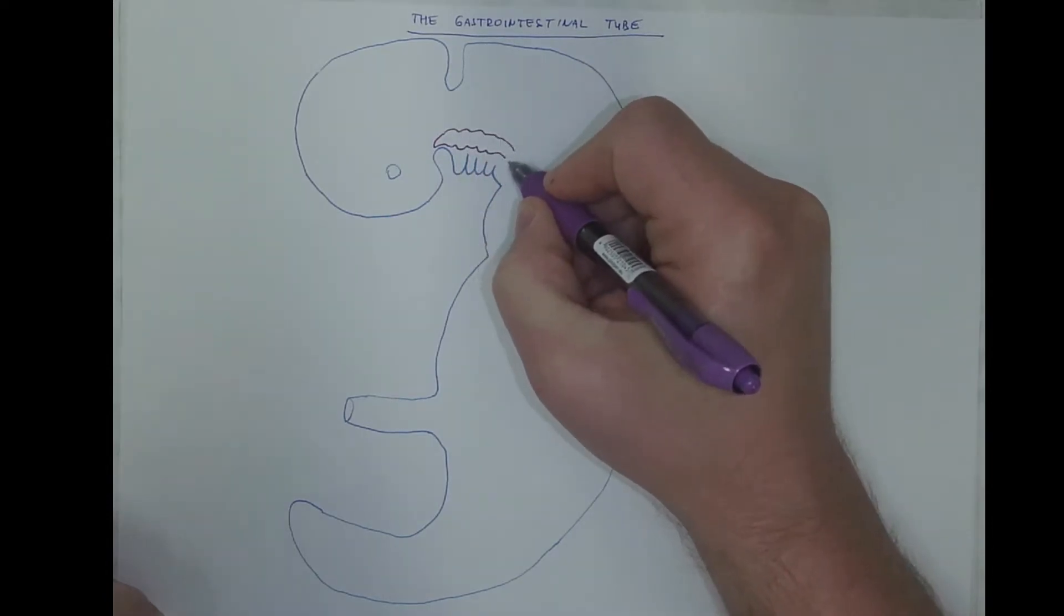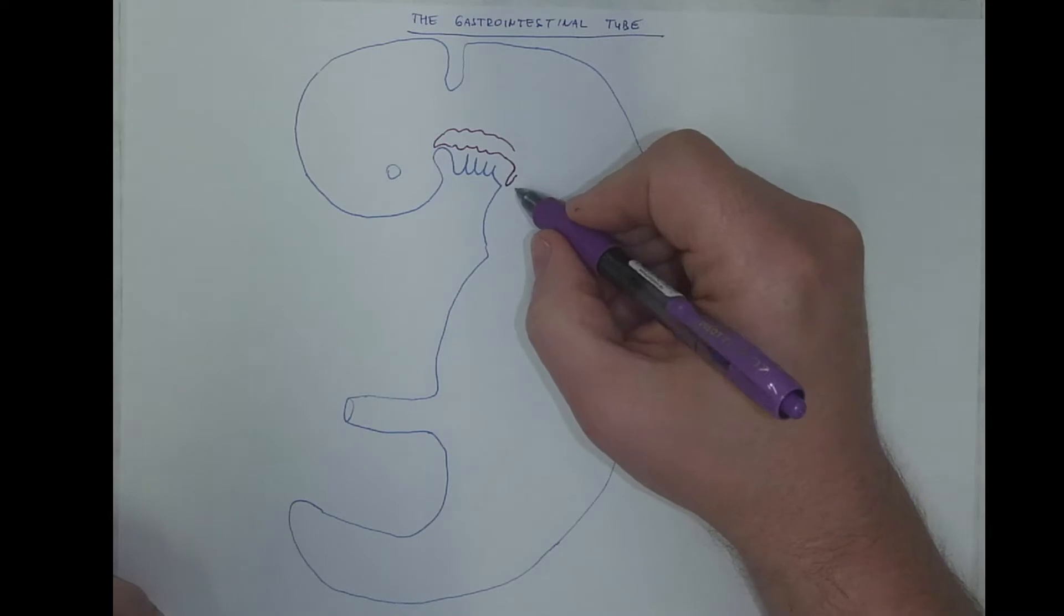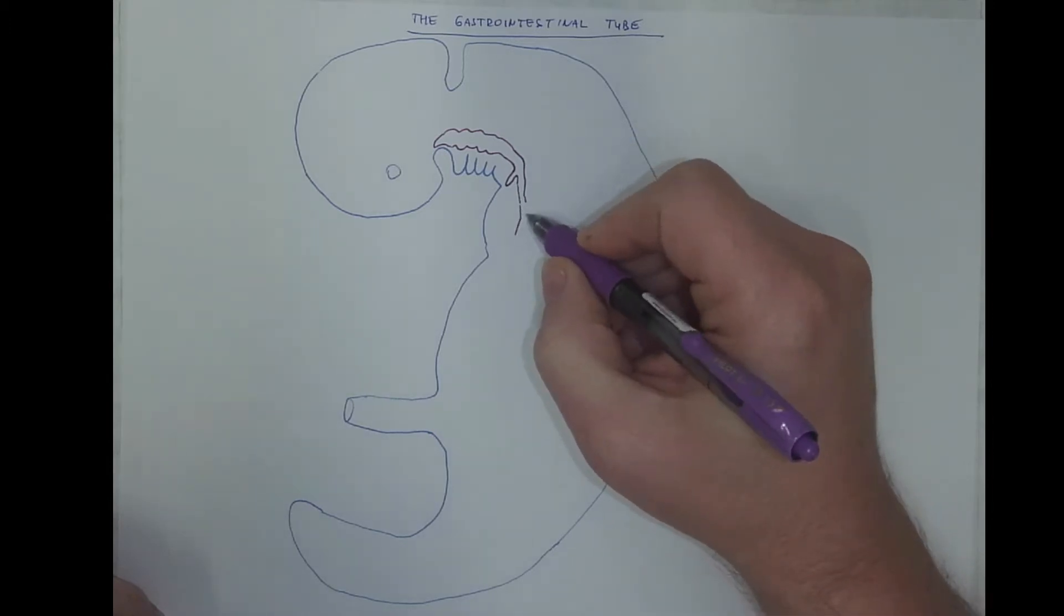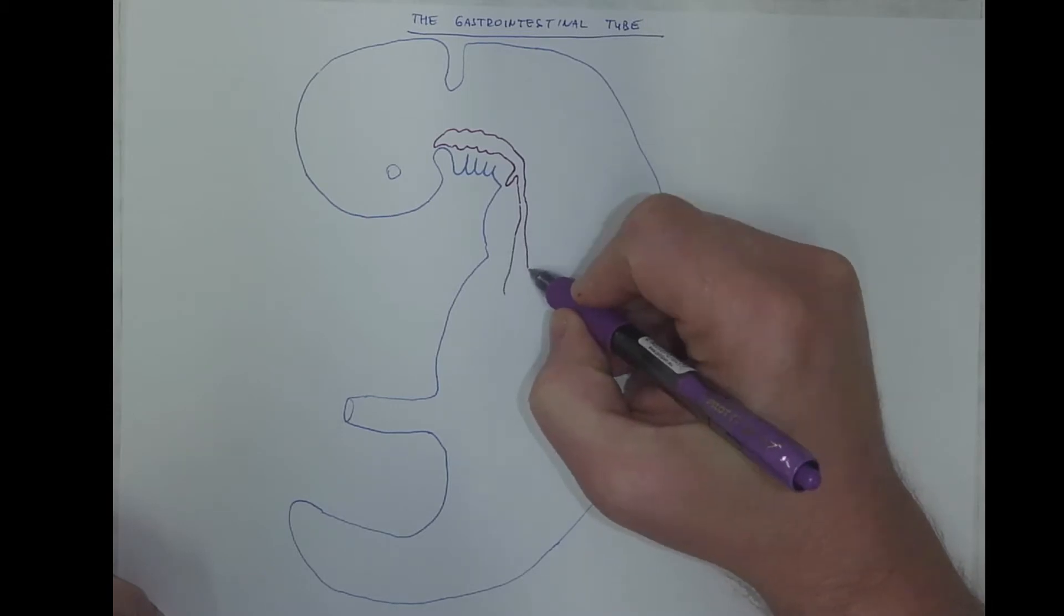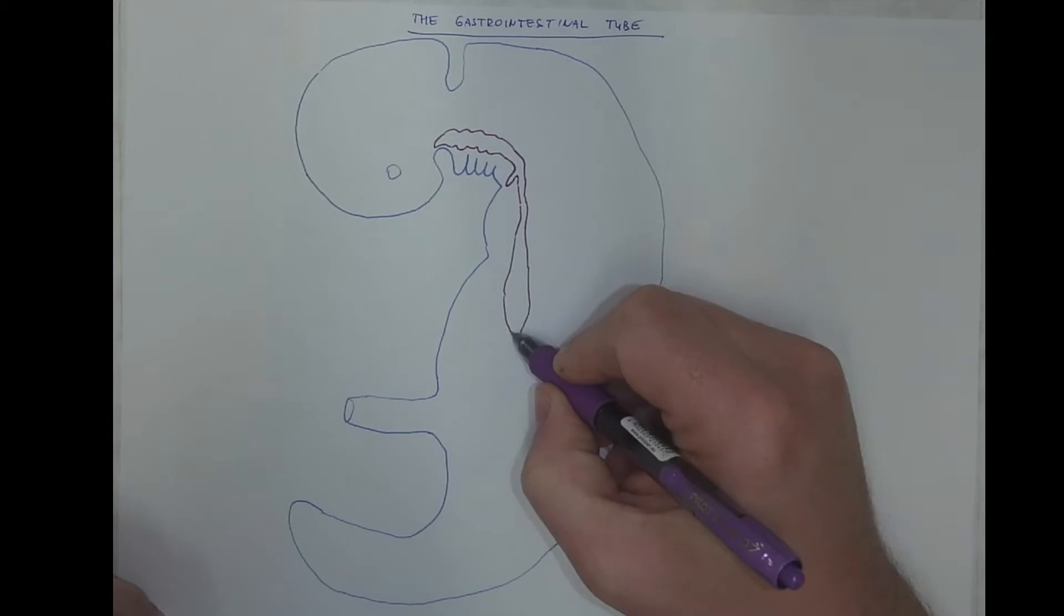starting with the pharynx and its pharyngeal pouches. Then, posterior to the pharynx, we got a ventral evagination of the endoderm, that will be the future lung or trachea, so it's called lung bud. Then we got the embryonic esophagus, dilation of the embryonic stomach,